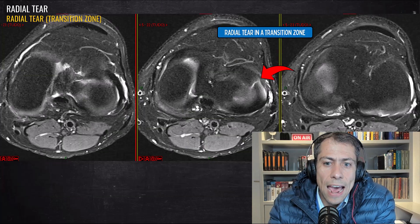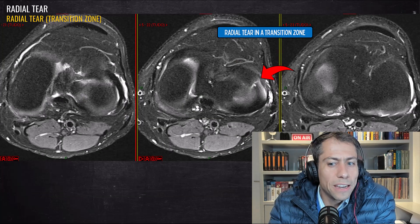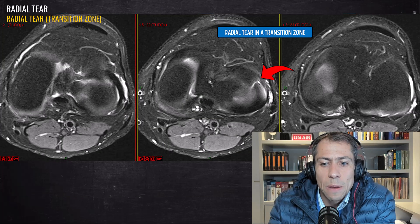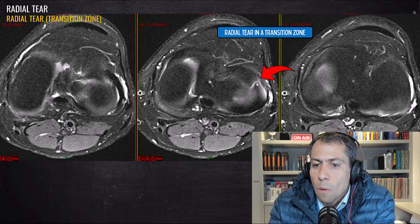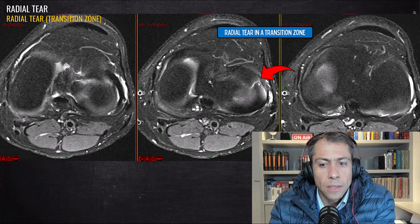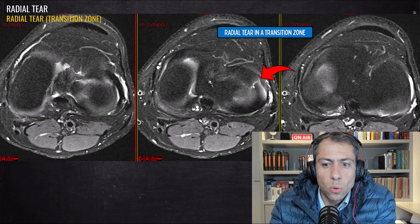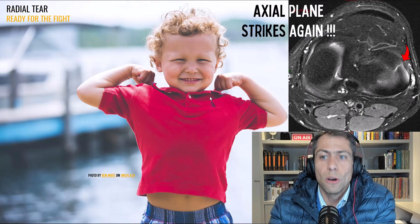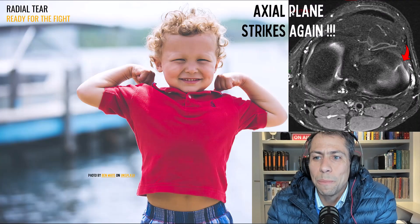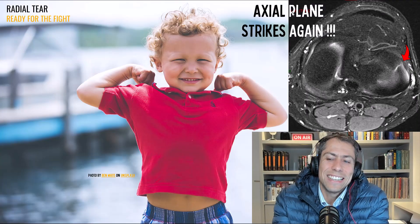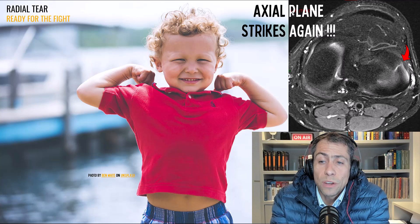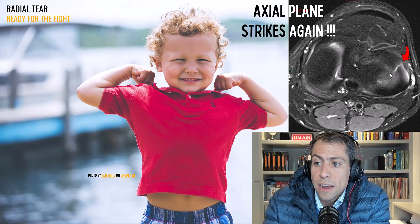Here the image is enlarged so you can appreciate the marching cleft sign. Look at the axial plane — you can see beautifully this tear in this region. It's almost a complete tear in this case. The axial plane was the best plane to identify this tear. The axial plane was very important to define the radial tear in this area.